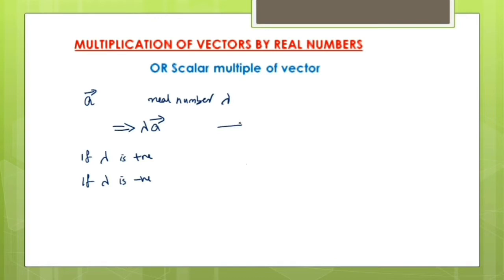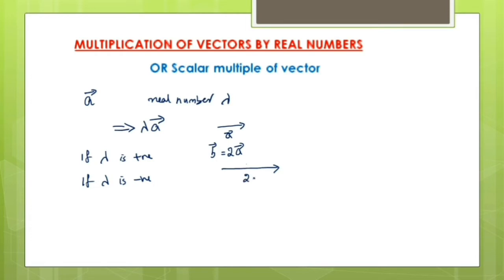Just imagine this is the vector a. If you multiply vector a with a real number, we will be getting a new vector. So I can write: vector b is equal to 2 times vector a. This is how you represent it in vector notation — 2 times vector a. So the original vector a now becomes 2 times vector a.